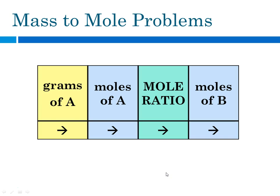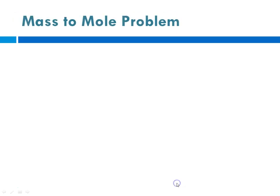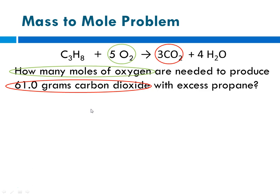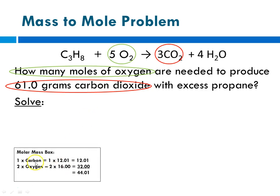Now we're going to do a mass-to-mole problem, where we start with grams, use molar mass to get to moles, use the mole ratio, and finally end up with moles of B. Same reaction — propane plus oxygen yields carbon dioxide plus water. How many moles of oxygen are needed to produce 61 grams of carbon dioxide with excess propane? The given is 61 grams of carbon dioxide; the unknown is moles of oxygen. Beginning with the molar mass box: 1 × carbon = 12.01, 2 × oxygen = 32.00, giving a molar mass of 44.01 g/mol.